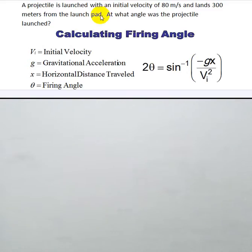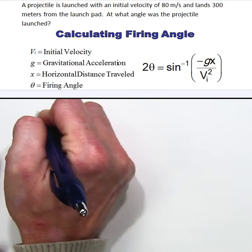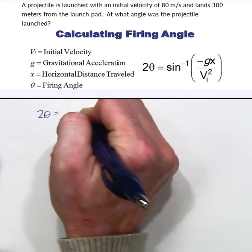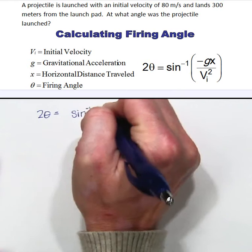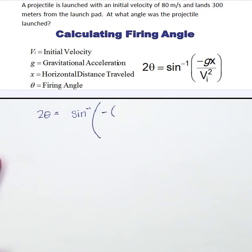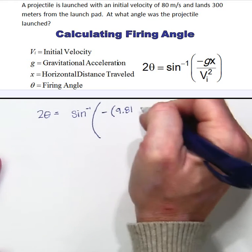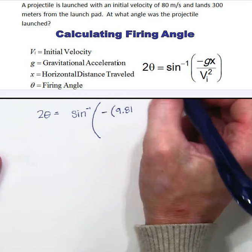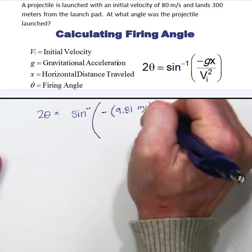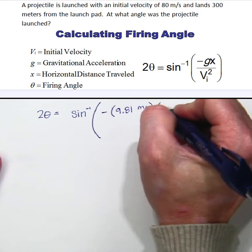So let's begin with our example and start to plug in the values that we know. We are going to do 2θ equals sine inverse and we are going to have negative g. The gravitational constant for acceleration that I am going to use in this example is going to be the international standard because our information was given in meters and seconds. So that is the constant that I am going to use. And then the x represents the horizontal distance that it traveled, that is 300 meters.